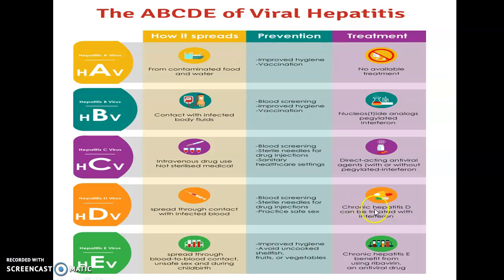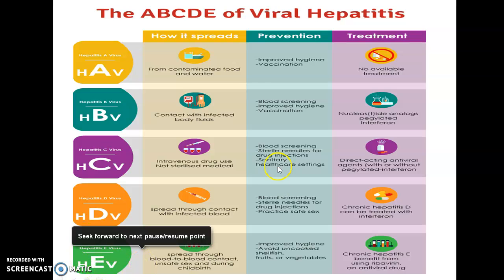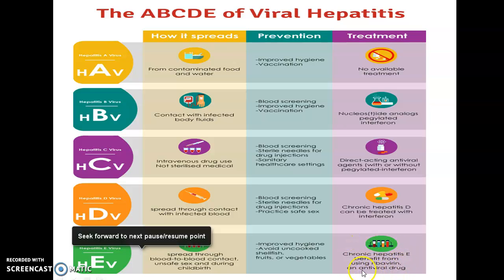Chronic Hepatitis D can be treated with interferon. Hepatitis E is spread through blood-to-blood contact, unsafe sex, and during childbirth; prevention includes improved hygiene and avoiding uncooked shellfish, fruit, or vegetables; treatment for chronic Hepatitis E can benefit from using ribavirin and other antiviral drugs.